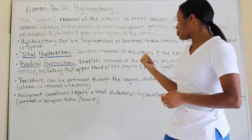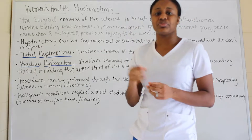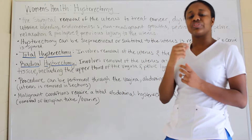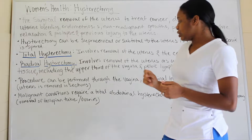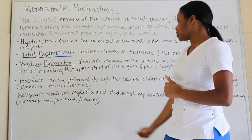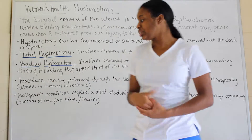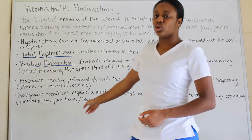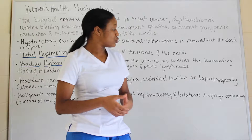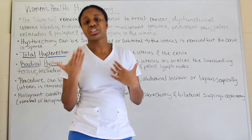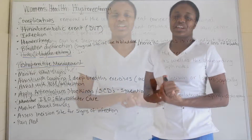This procedure can be performed through the vagina, an abdominal incision, or laparoscopically, taking things piece by piece until everything is removed. Malignant conditions require a total abdominal hysterectomy and a bilateral salpingo-oophorectomy, which is the removal of the fallopian tubes and the ovaries. 'Ectomy' means removal, 'salpingo' means fallopian tubes, and 'oophor' refers to the ovaries.